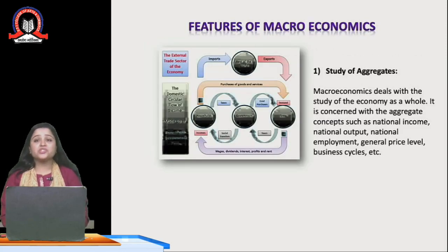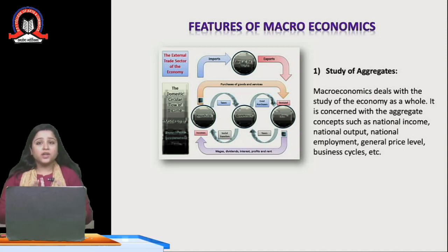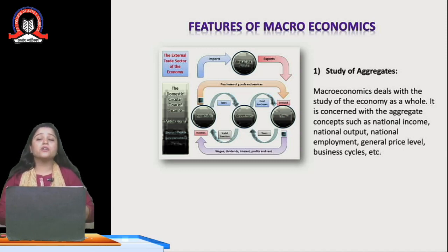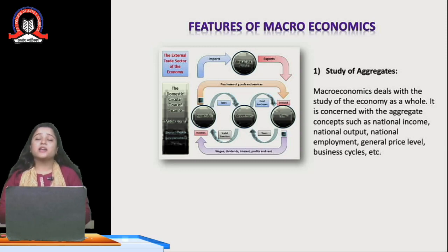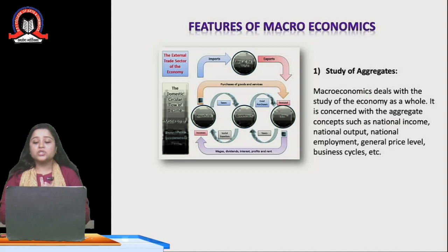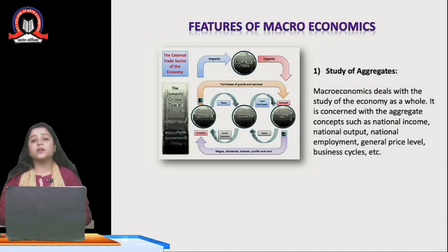Now let's understand the features of macroeconomics. The first feature is the study of aggregates. Macroeconomics deals with the study of aggregates and the economy as a whole. We are not studying individual units like in microeconomics — such as the study of an individual tree or the income of an individual person. Here, we consider the entire economy. For example, when we study the entire forest, that is covered under macroeconomics. Concepts such as national income, national output, national employment, general price level, business cycles, and market fluctuations are all covered under macroeconomics.